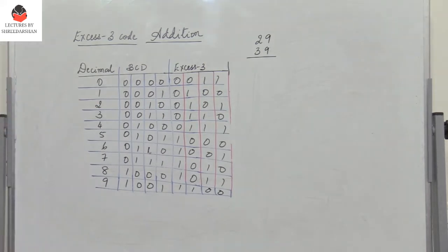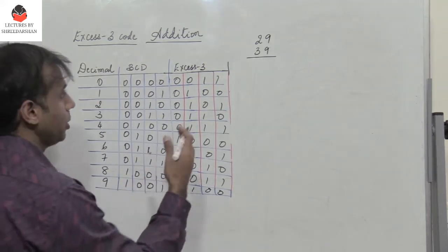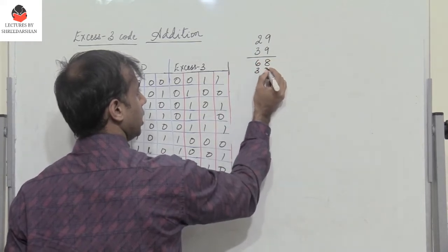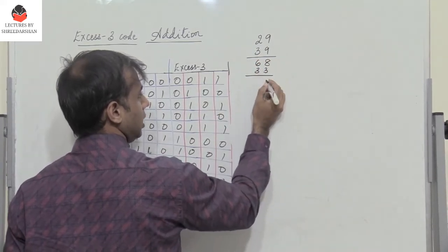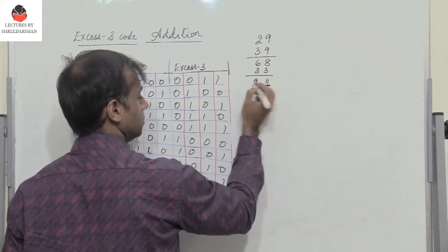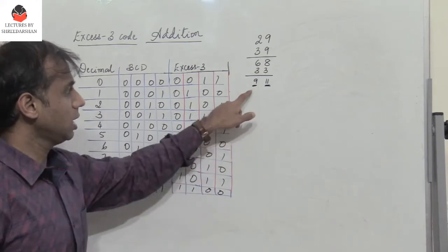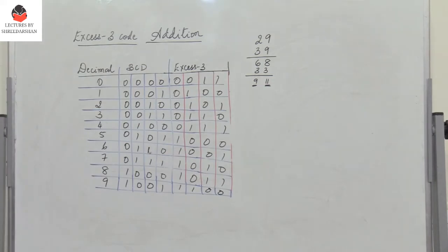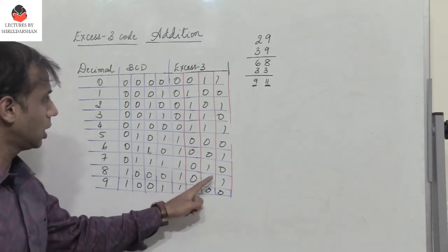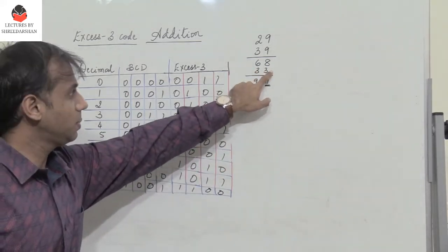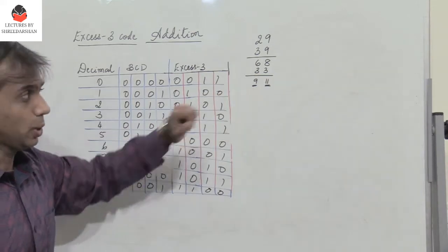29 plus 39: in general, adding these two numbers gives 68. When we add 3 to both digits, we get 8 plus 3 is 11 and 9 here. So I must get the 4-bit representation of 9, which is 1001, and I need to get 11, which is 1011. So XS3 of 8 is 8 plus 3 which gives me 11. This is what I need to get.